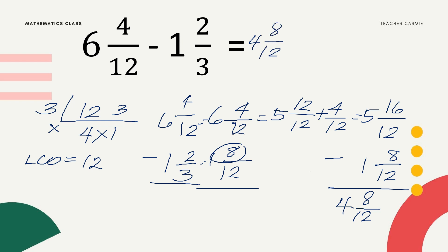Can we stop at 4 and 8/12? Not yet, since 8 and 12 are divisible — the GCF is 4. 8 divided by 4 equals 2, and 12 divided by 4 equals 3. Copy the whole number. The final answer is 4 and 2/3.